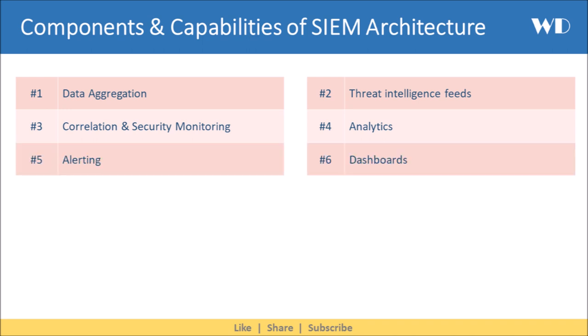SIEM generates alerts — it analyzes events and sends alerts to notify security staff of immediate issues. It also provides dashboards that create visualizations to let staff review event data, identify patterns and anomalies.